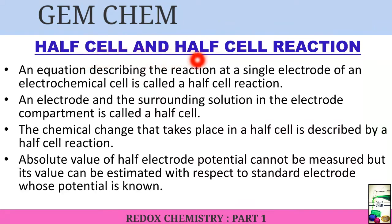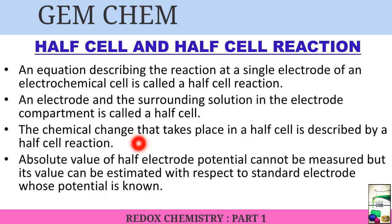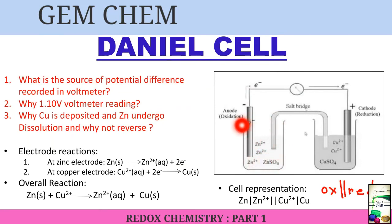We need to know what a half cell and half cell reaction are. An equation that describes the reaction at a single electrode of an electrochemical cell is called a half cell reaction. The electrode and surrounding solution in an electrode compartment together form a half cell. The absolute value of the half electrode potential cannot be measured directly; its value can only be estimated with respect to a standard electrode whose potential is known.